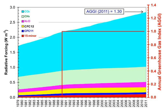Without greenhouse gases, the average temperature of Earth's surface would be about minus 18 degrees Celsius (0 degrees Fahrenheit), rather than the present average of 15 degrees Celsius (59 degrees Fahrenheit). The atmospheres of Venus, Mars, and Titan also contain greenhouse gases.